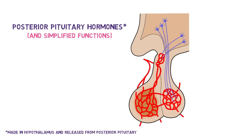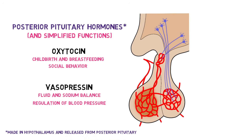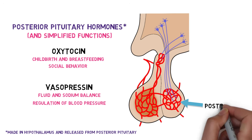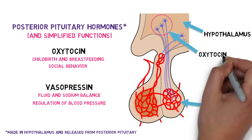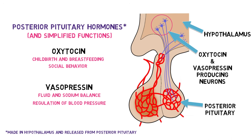Two hormones, oxytocin and vasopressin, are secreted into the bloodstream from the posterior pituitary. These hormones are not made in the pituitary gland, but instead are synthesized in neurons in the hypothalamus. The axons of these neurons extend from the hypothalamus to the posterior pituitary, and oxytocin and vasopressin are transported from their site of synthesis in the cell body to axon terminals in the posterior pituitary. They are secreted into the bloodstream as a result of action potentials in the neurons they are found in.